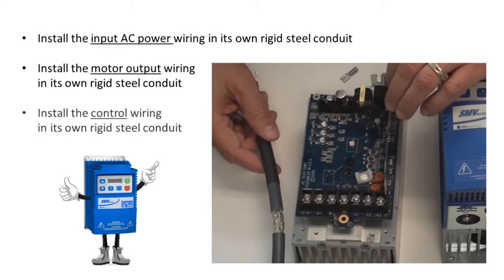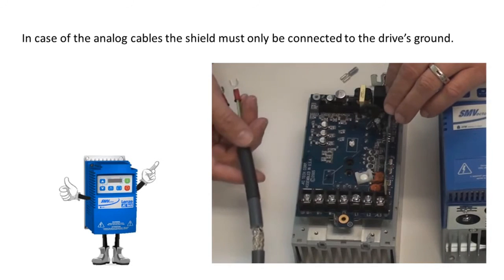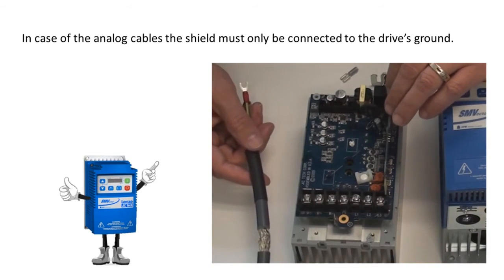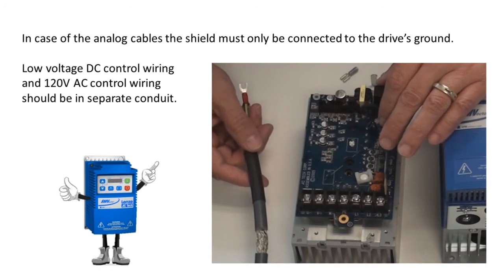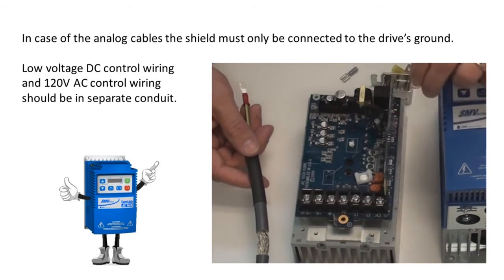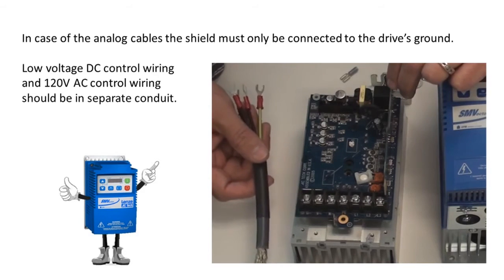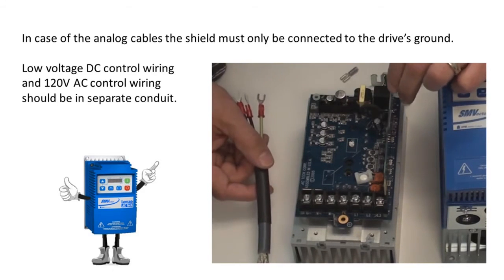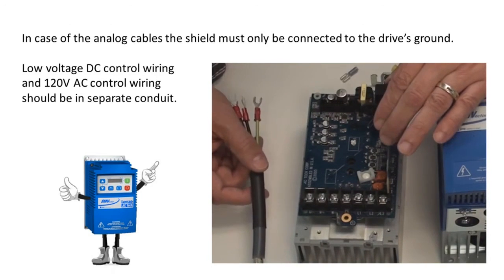Step three is to install the control wiring also in its own rigid steel conduit. In case of an analog cable, the shield must only be connected to the drive's ground. Low voltage DC control wiring and 120 volt AC control wiring should ideally be in separate conduit, but we know with many panel designs, this is not always possible.